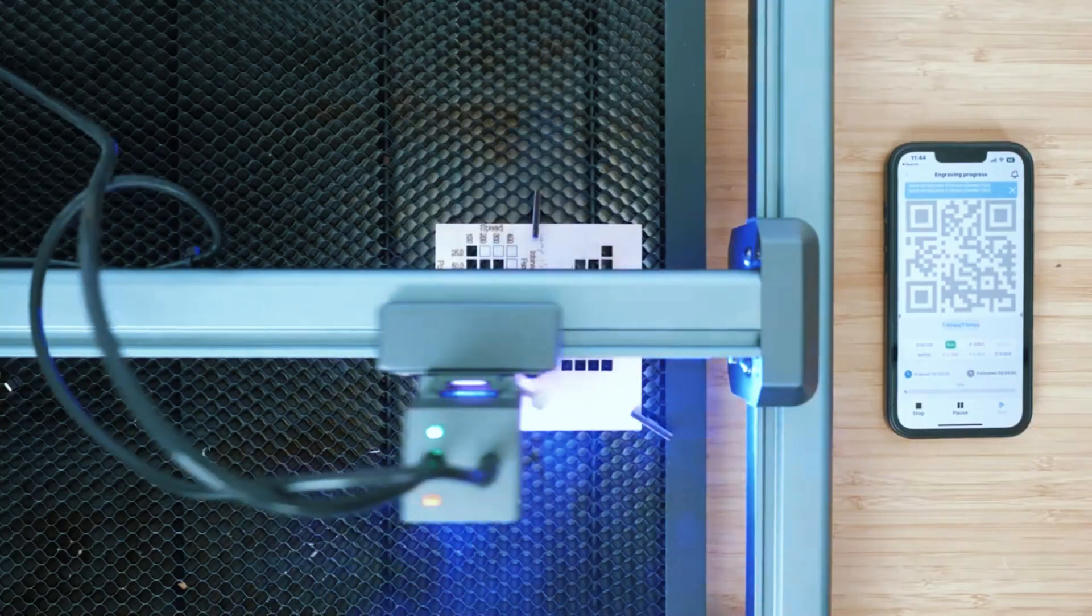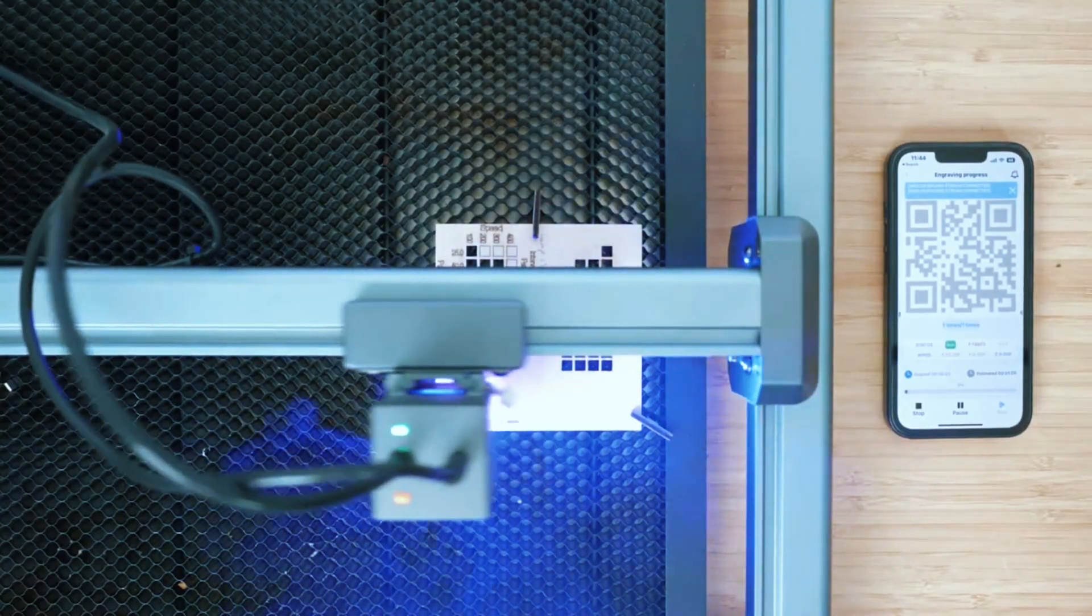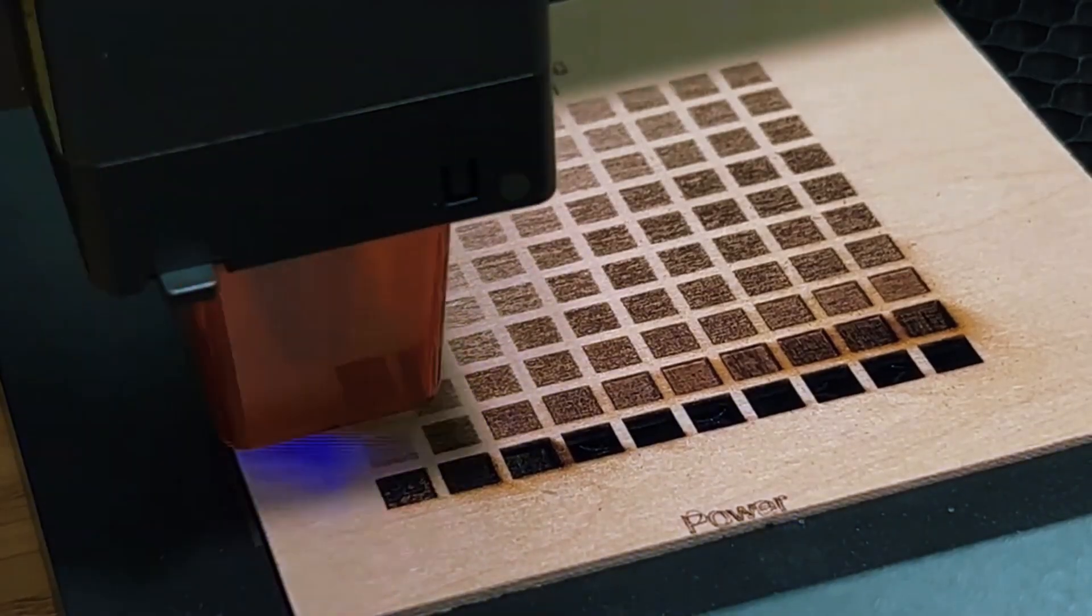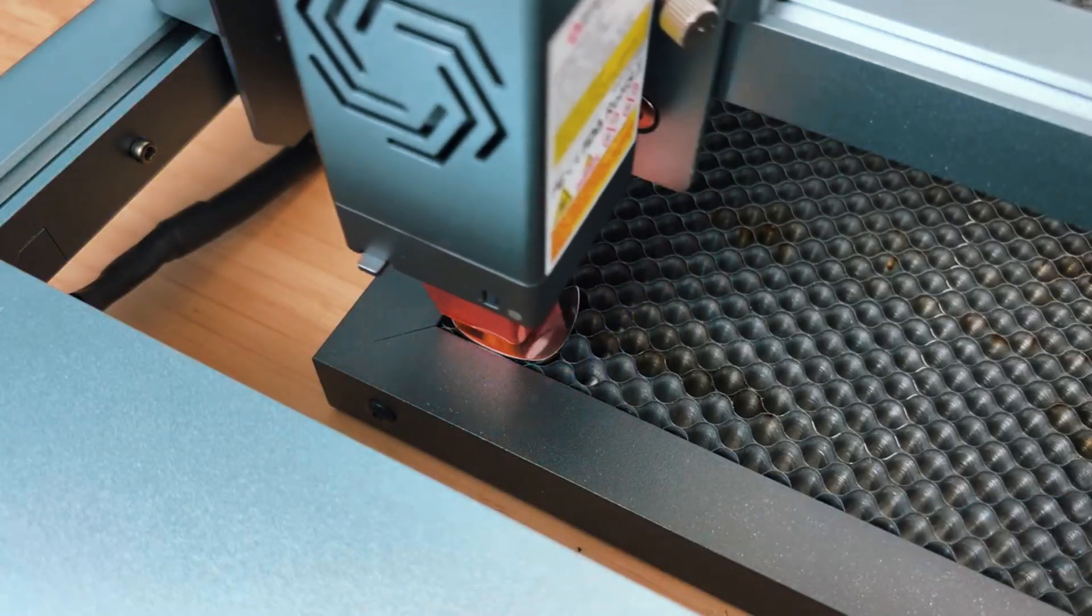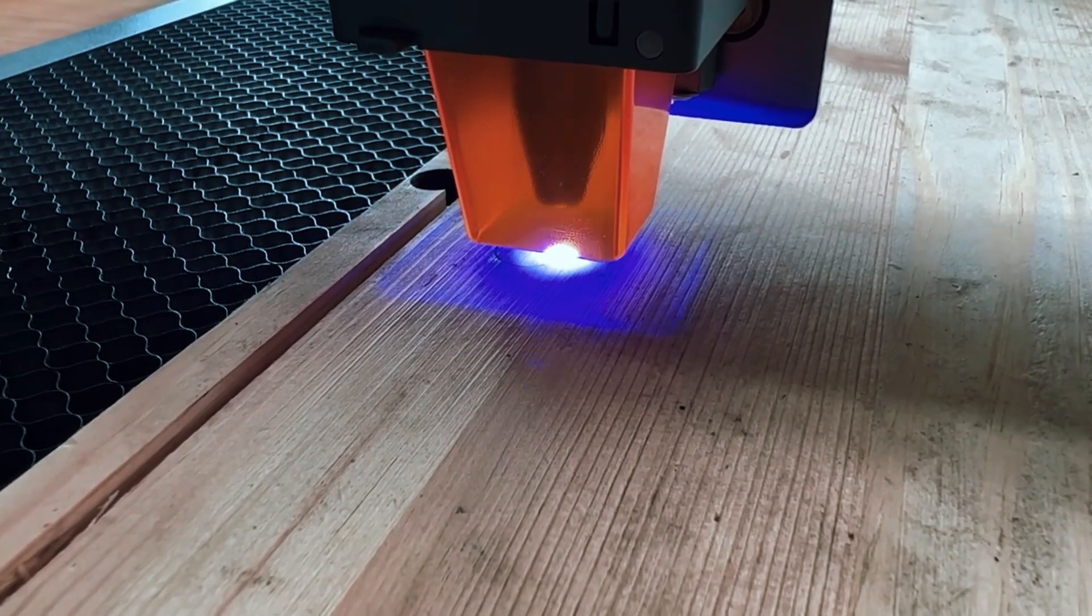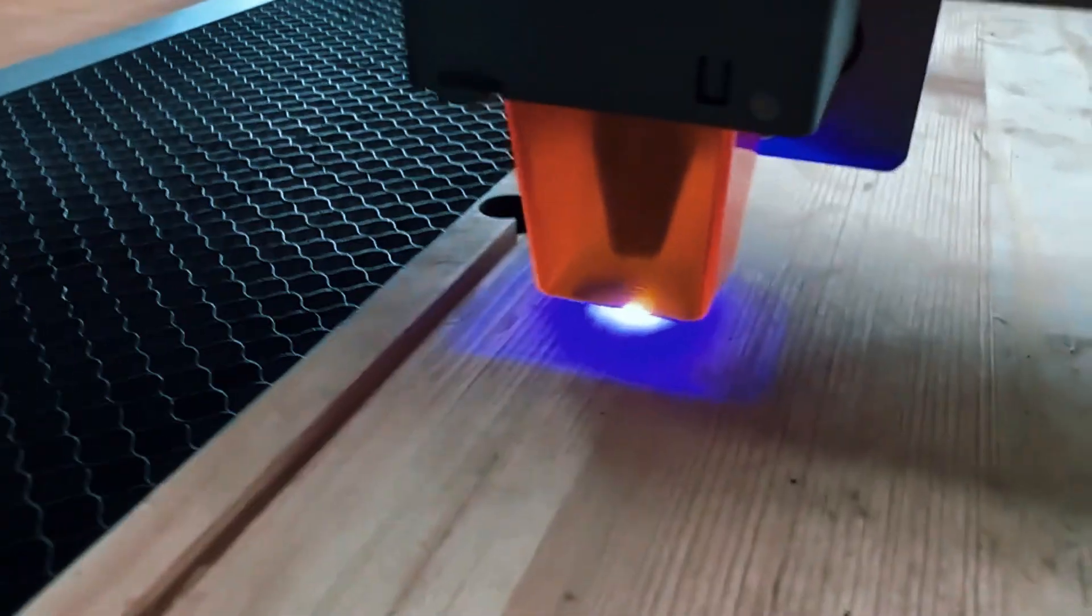With a spacious working area that comfortably fits larger wood panels, leather pieces, or acrylic sheets, it gives beginners room to experiment without feeling limited. Its diode module produces a fine, concentrated beam that handles detailed engraving well, and the lightweight gantry system moves smoothly enough to keep lines sharp during long runs.